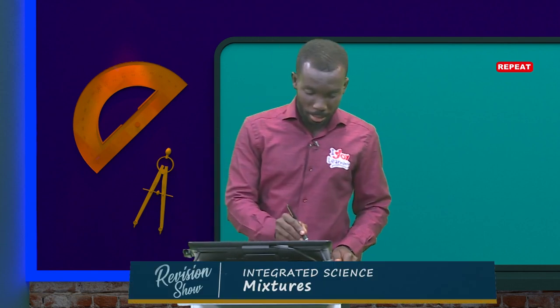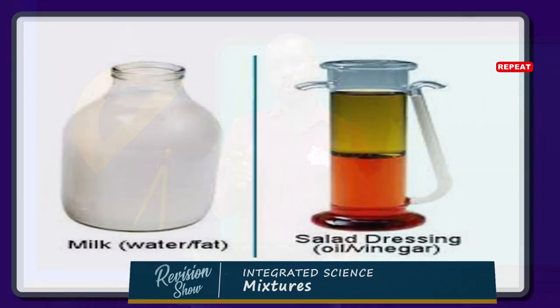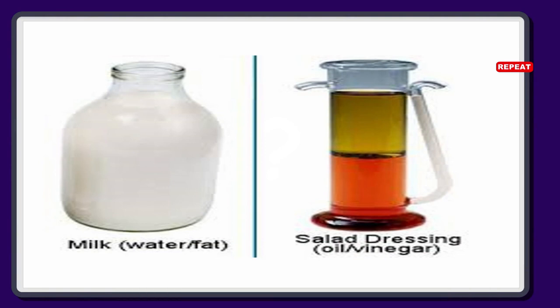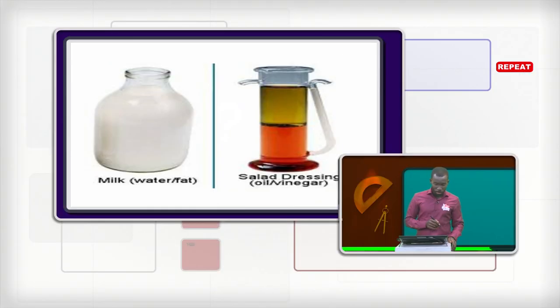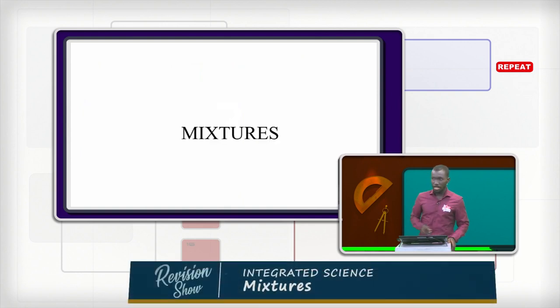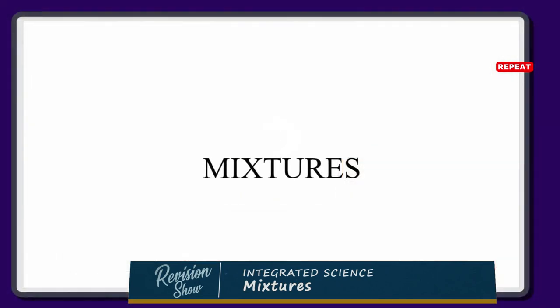Now just look at what I have displayed here and see whether you can guess what topic we are going to discuss today. It's going to be very, very interesting — one of the most interesting topics for you to learn in science for junior high schools. If your guess was this, then it's just mixtures. We're going to have one beautiful discussion today on mixtures.